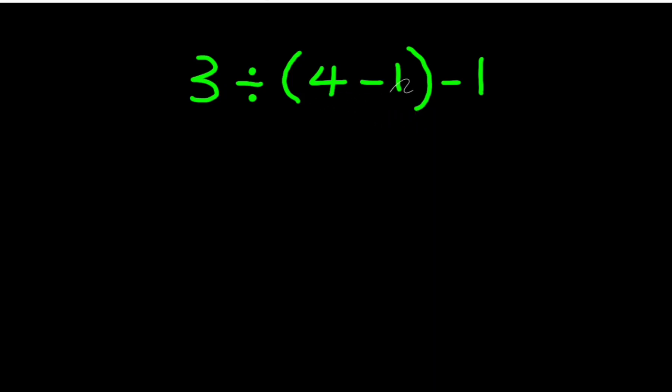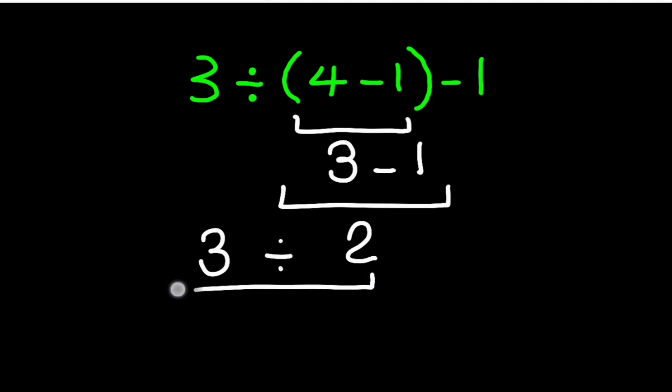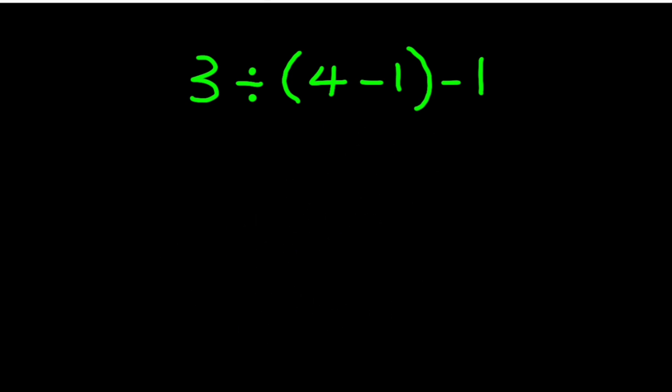4 minus 1 gives us 3, and 3 minus 1 equals 2. Now 3 divided by 2 gives us 3 over 2. But this answer is not correct because according to the order of operations, we have to solve this math expression in this way.